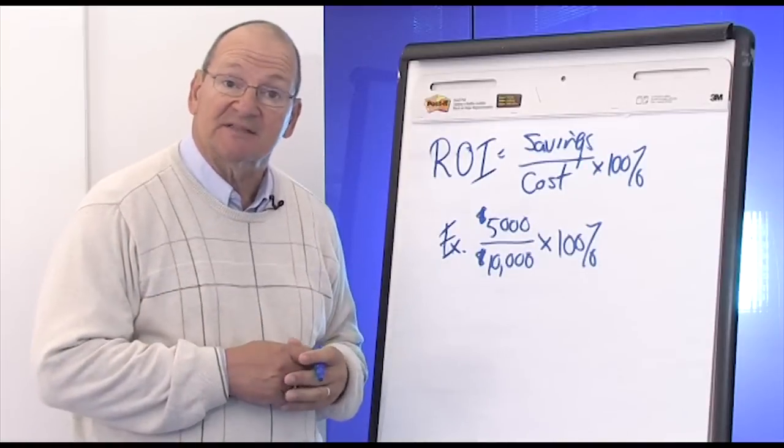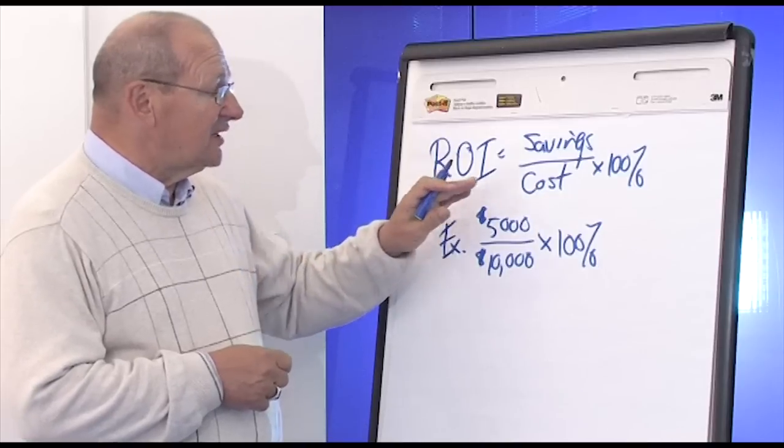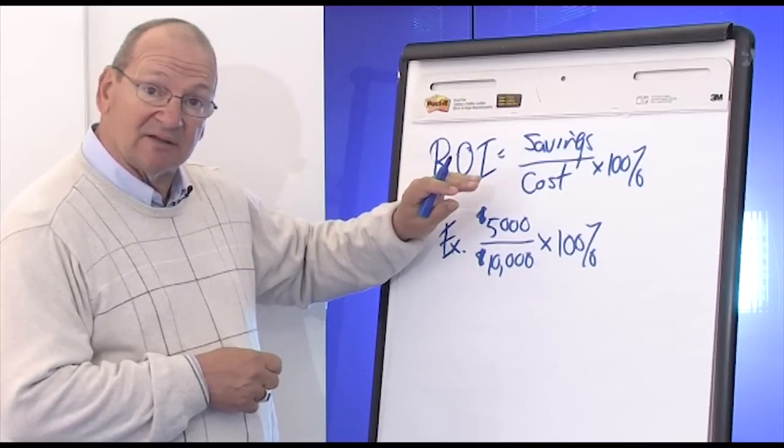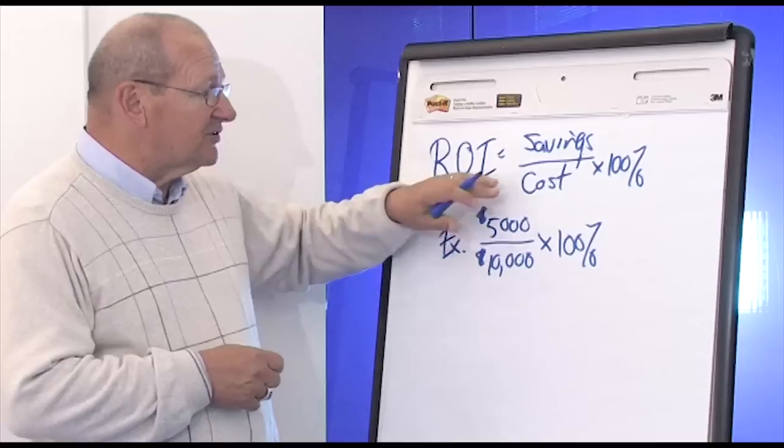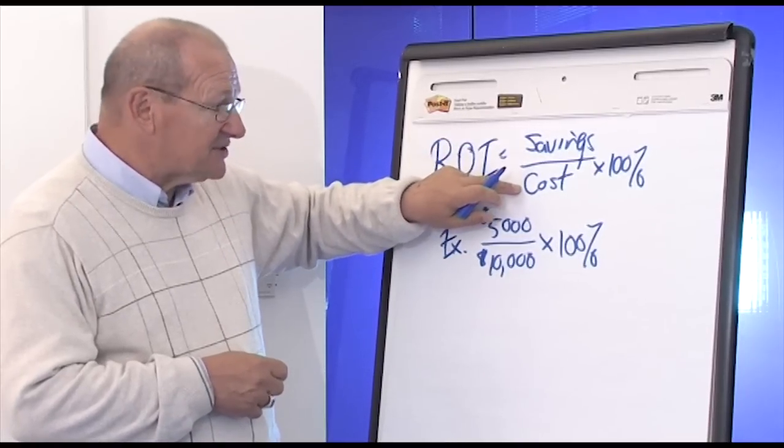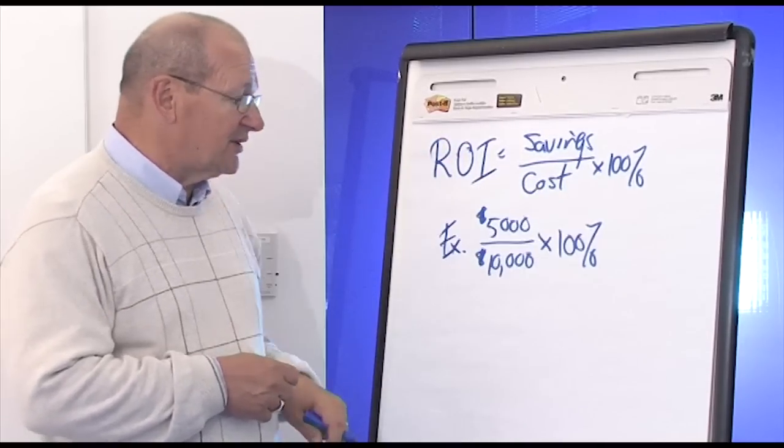Let's take a look at ROI, return on investment. Here we're going to take that payback calculation and flip it over. This time the savings is on top, the cost is on the bottom, and we multiply by 100%.